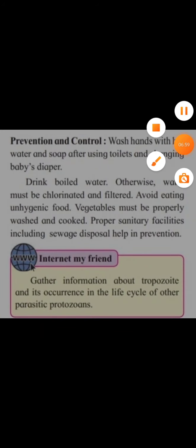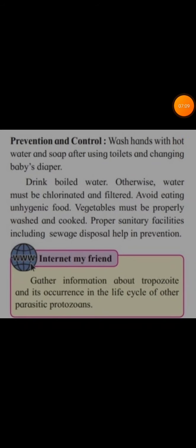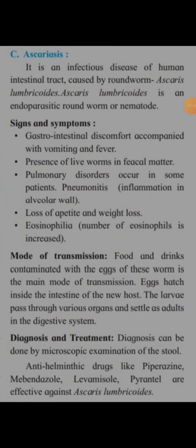One homework assignment: you have to gather information about the trophozoite and its occurrence in the life cycle of other parasitic protozoans. With this, we have completed amoebiasis. Now we will start with ascariasis. This is also an infectious disease of the human intestinal tract, caused by the roundworm Ascaris lumbricoides.